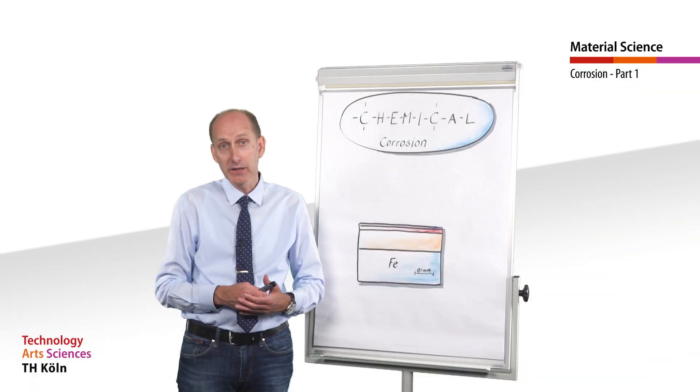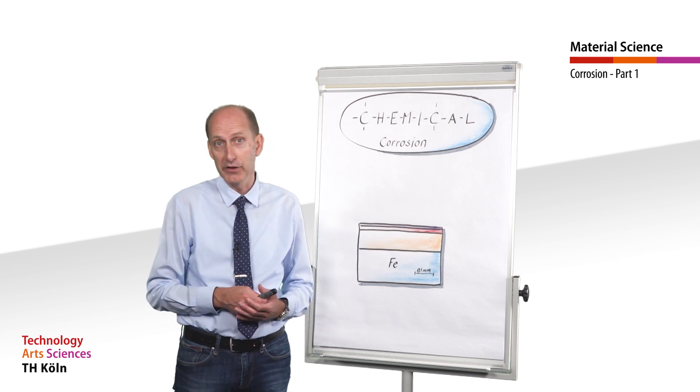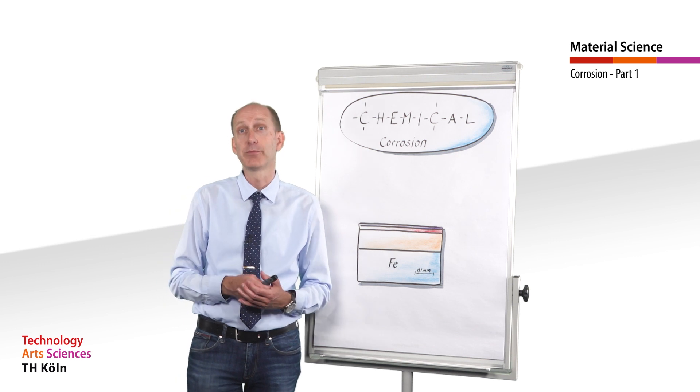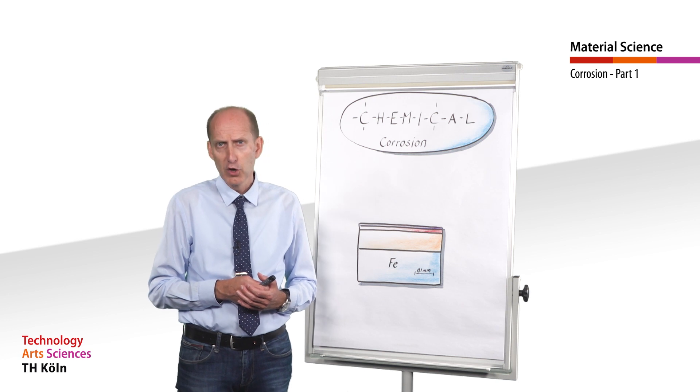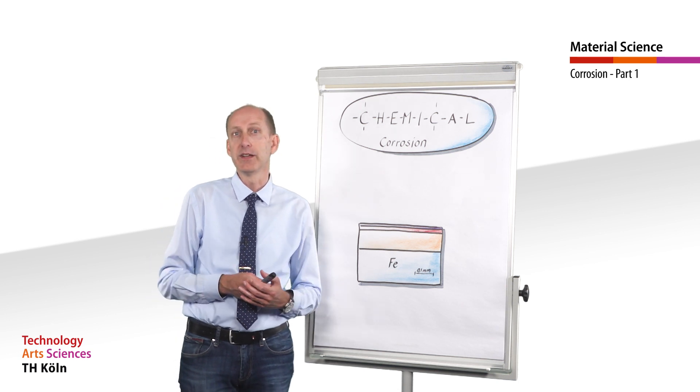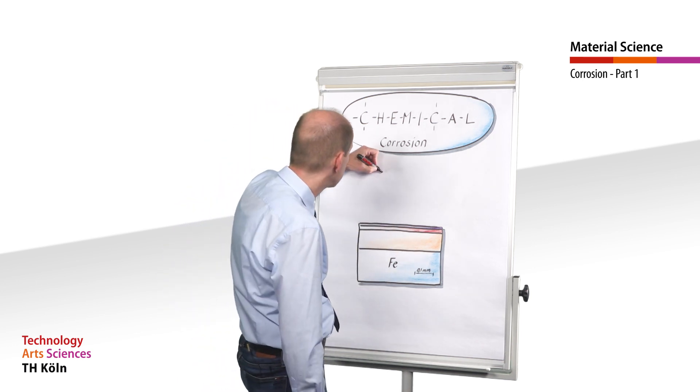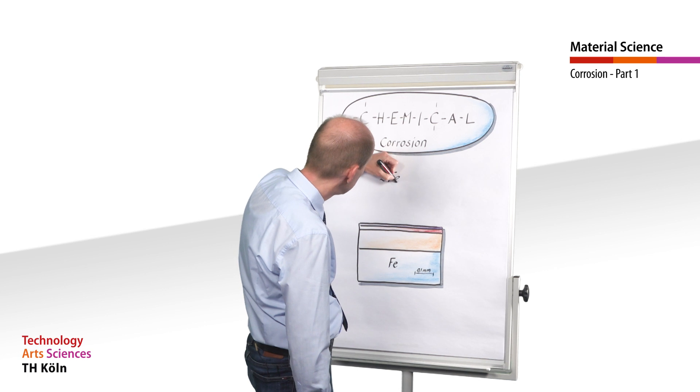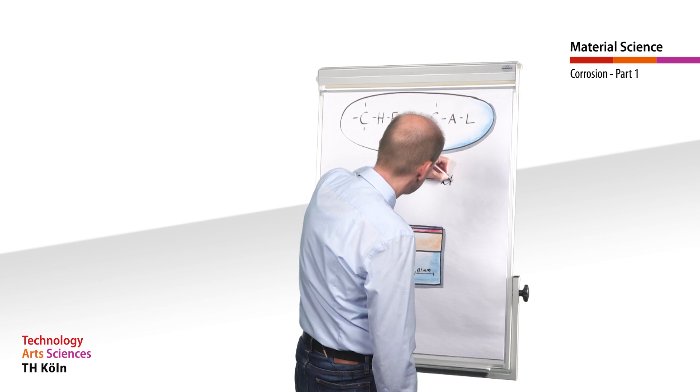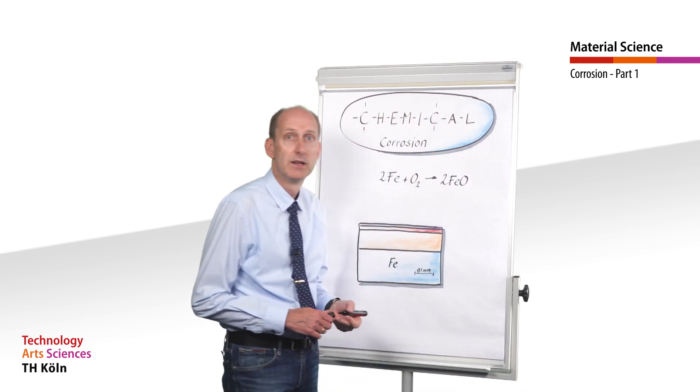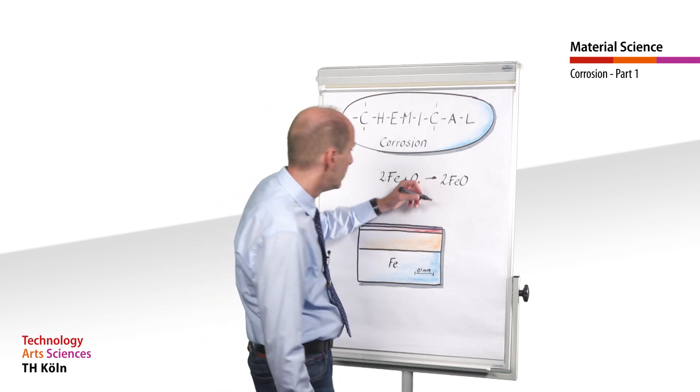As already mentioned, chemical corrosion is the reaction of iron in an oxygen containing atmosphere at high temperatures. However, the temperature must be very high, namely greater than 570 degrees Celsius, which is not necessarily a rarity in plants of the chemical industry. The main reaction is then 2Fe plus O2 react to 2FeO. The compound FeO is formed, which is called Wüstite.